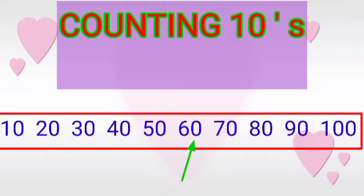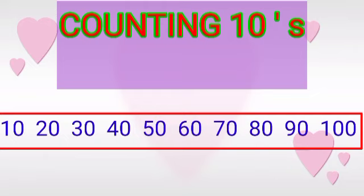Sixty plus ten, what will come here, Kuti? Seventy. Seventy plus ten, what will come here? Eighty. Eighty plus ten, what will come here? Ninety. Ninety plus ten, what will come here? Hundred.